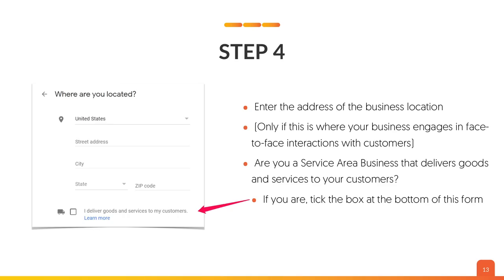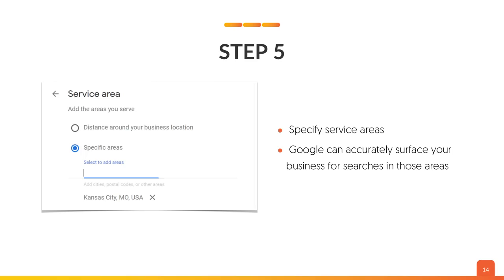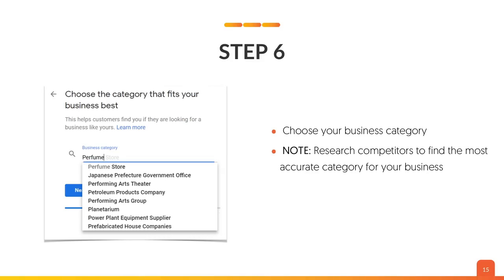Step four: enter the address of the business location, only if the business engages with people face-to-face — not virtual places. Pick the address of your physical location. And if you're a service area business that delivers goods, tick that box at the bottom of the form. Step five: specify the service areas you offer, so Google can accurately surface your business for searches in those areas. Step six: choose the right business category, and research your competitors to find the most accurate categories before you do this.